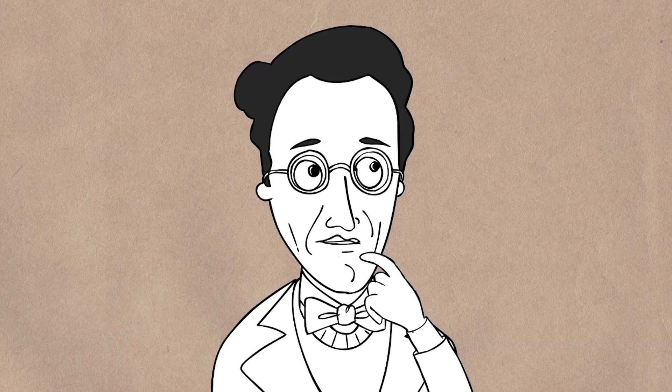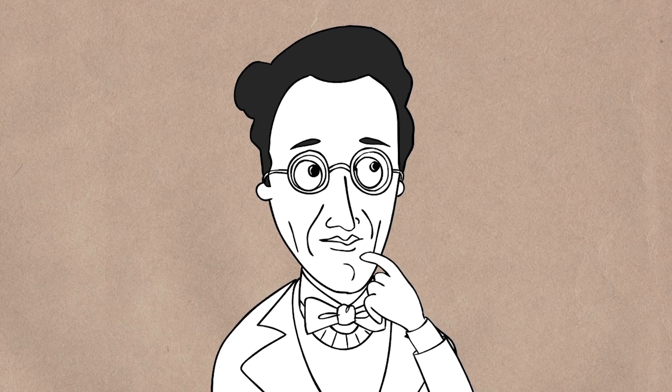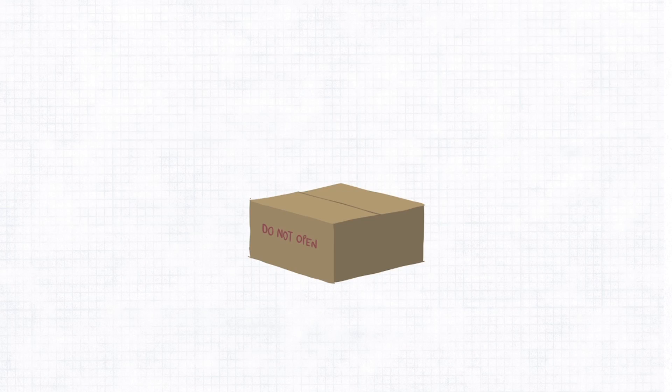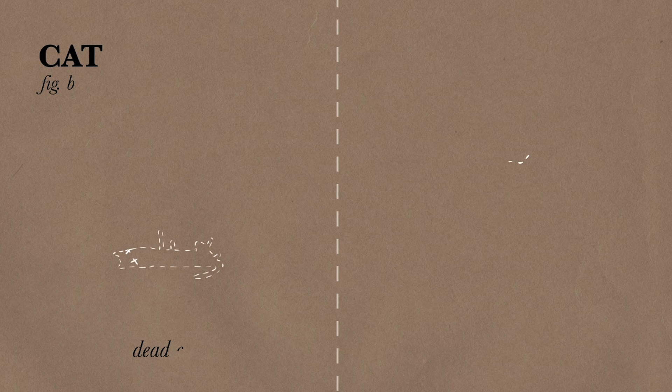And the way he tried to describe this was, he said, imagine the unobservability of this is that there's a cat in a box, and you can't open the box. The cat has a 50-50% chance of being dead or alive.